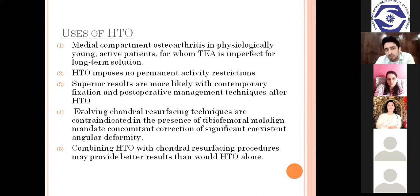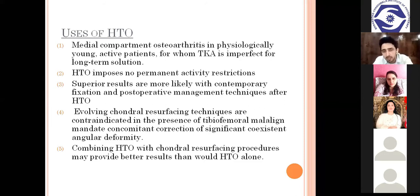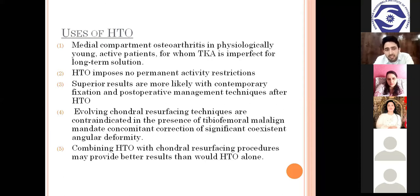What are the uses of high tibial osteotomy? It is indicated for medial compartment osteoarthritis in physiologically young, active patients for whom knee replacement is not an ideal long-term solution. High tibial osteotomy imposes no permanent activity restriction because this surgery only touches the tibia, not the whole joint. In knee replacement surgery, the active flexion range we achieve as physiotherapists is around 115 to 120 degrees. In high tibial osteotomy, you may achieve full range — cross-leg sitting is also allowed.